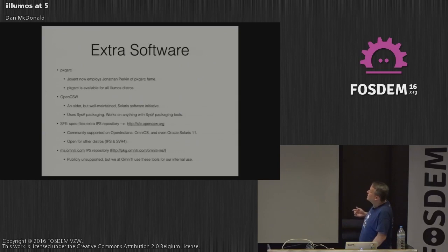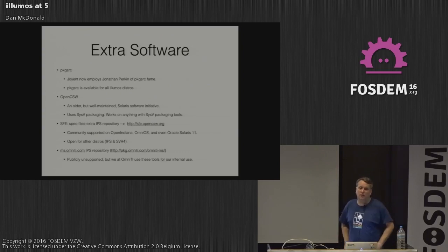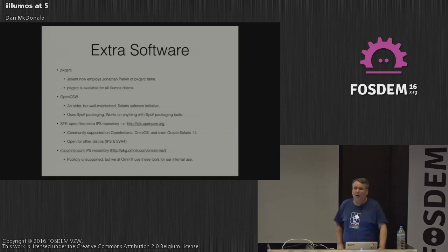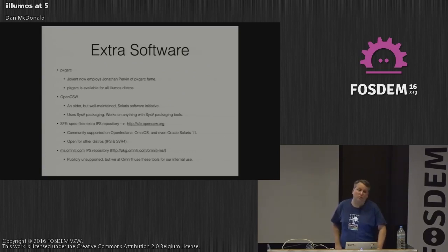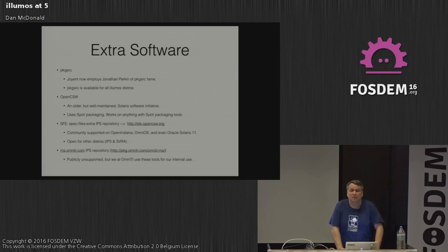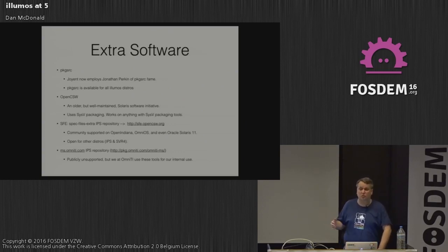For Illumos, we also have sources of extra software. Joyent employs Jonathan Perkin and he works on pkgsrc, now available for all Illumos distros. An older one from the Sun days is OpenCSW — community software, formerly SunCSW. It uses SVR4 packaging and works on anything with SVR4 packaging tools, which are part of Illumos gate and available even though nobody uses them in their base distros.